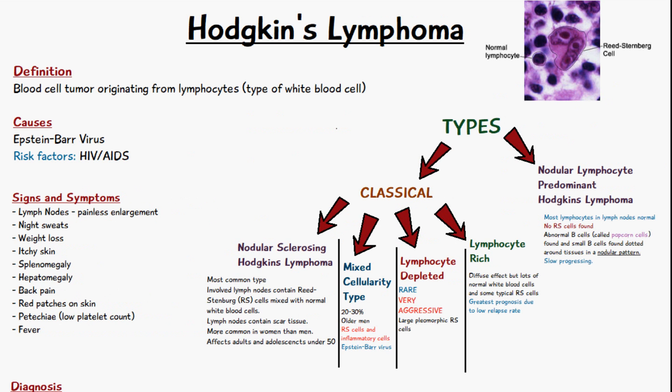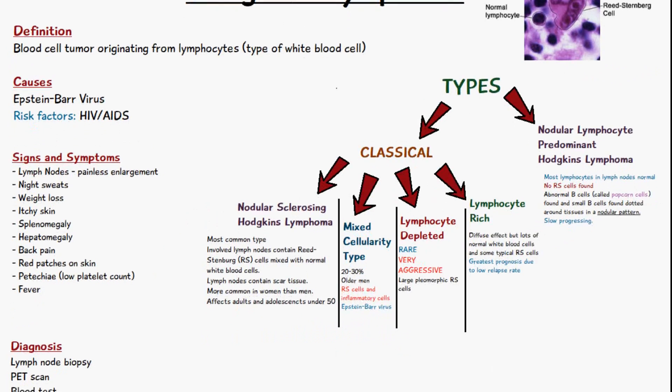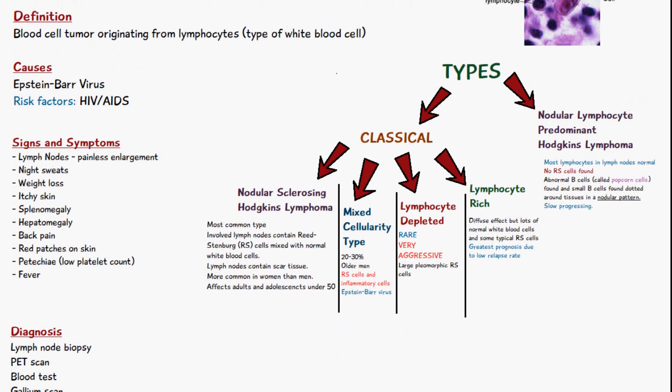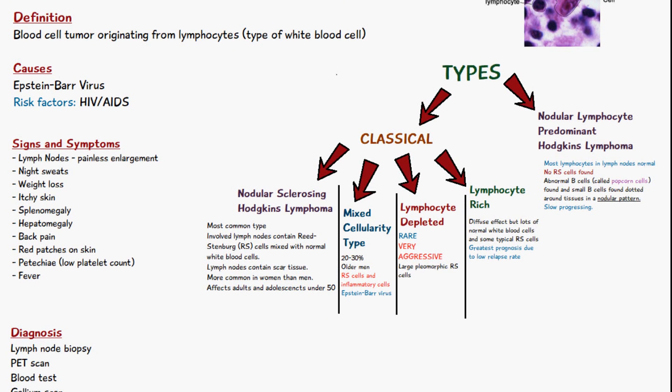The signs and symptoms of Hodgkin's lymphoma include tiredness, painless enlargement of the lymph nodes, night sweats, weight loss, itchy skin, enlargement of the spleen, enlargement of the liver, back pain, red patches on the skin, and petechiae — which are small hemorrhages in the skin due to a low platelet count — and fever in some cases.